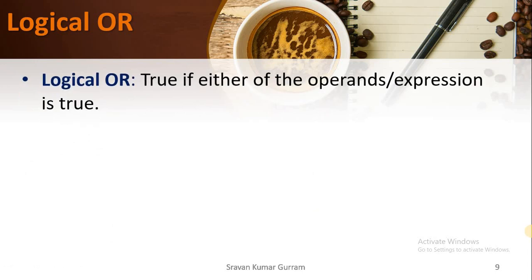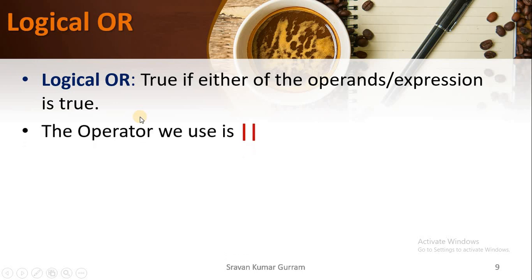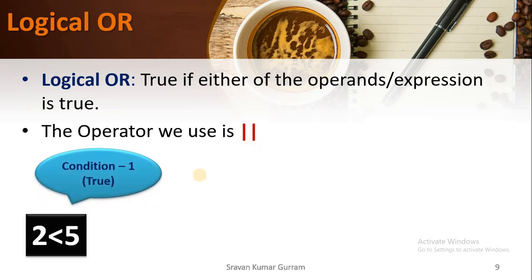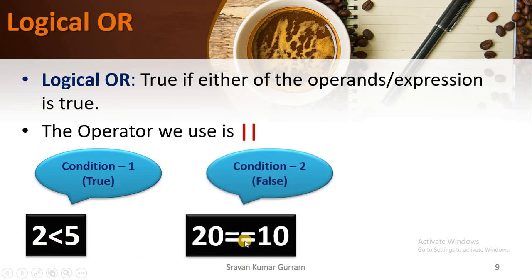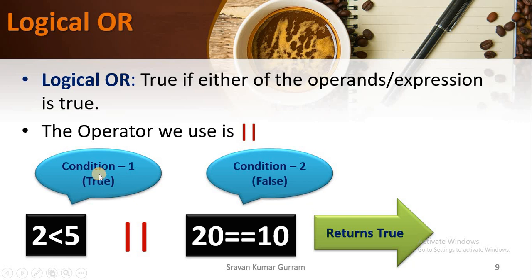Logical OR returns true if either of the operands or expressions is true. Simply put, if at least one operand is true, logical OR returns true. We use the double pipe symbol (||) as the logical OR operator. For example, condition one — 2 less than 5 — is true, and condition two — 20 equals 10 — is false. If we apply logical OR to combine these two, it returns true because at least one condition is true.